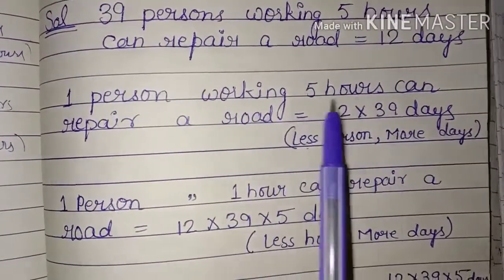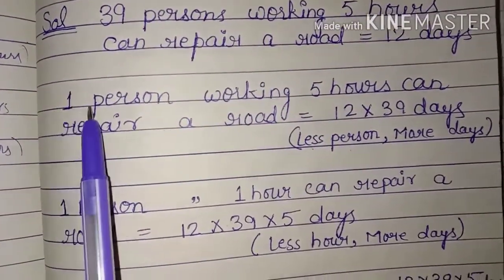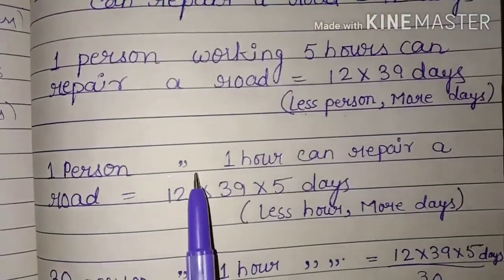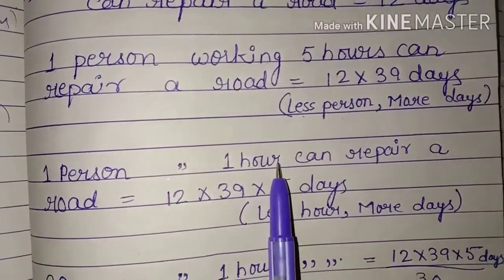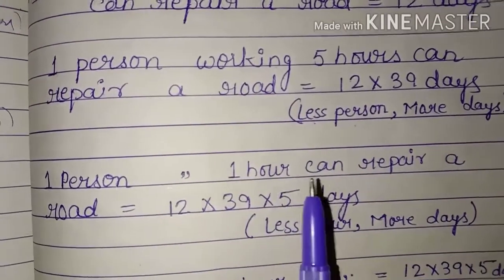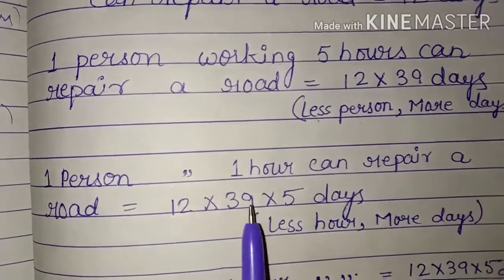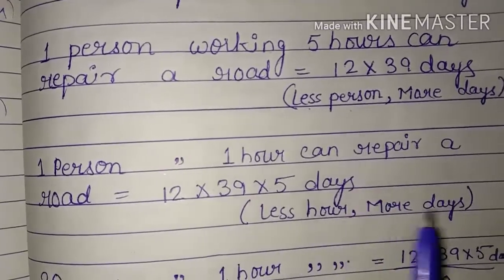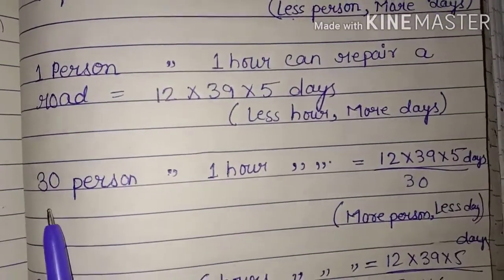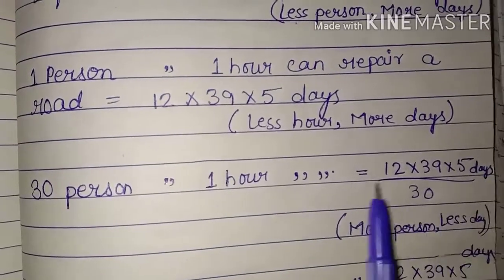1 worker working 5 hours can repair the road in 12 × 39 days. Since less persons means more days, 1 person working 1 hour can repair the road in 39 × 5 days, divided by 30.